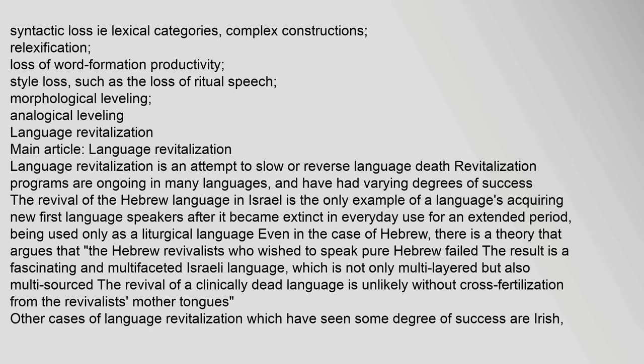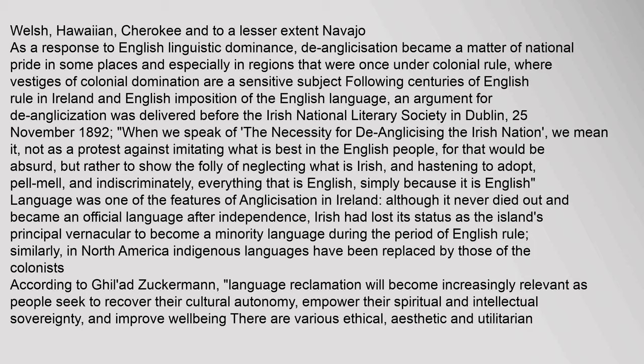Other cases of language revitalization which have seen some degree of success are Irish, Welsh, Hawaiian, Cherokee, and to a lesser extent Navajo. As a response to English linguistic dominance, de-anglicization became a matter of national pride in some places, especially in regions that were once under colonial rule, where vestiges of colonial domination are a sensitive subject. Following centuries of English rule in Ireland and the imposition of the English language, an argument for de-anglicization was delivered before the Irish National Literary Society in Dublin, 25 November 1892: 'When we speak of the necessity for de-anglicizing the Irish nation, we mean it not as a protest against imitating what is best in the English people, for that would be absurd, but rather to show the folly of neglecting what is Irish, and hastening to adopt, pell-mell and indiscriminately, everything that is English.'